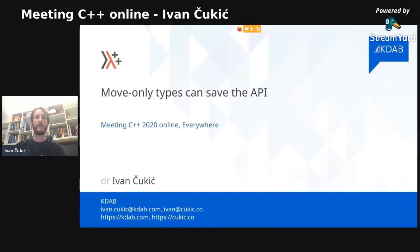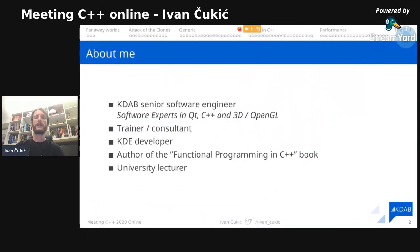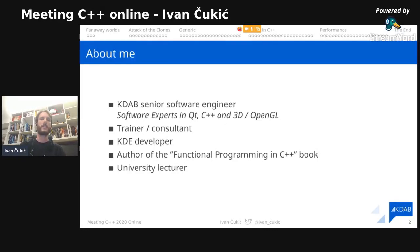Today's talk is going to be about move-only types and how they can save the API. I'm a KDAB senior software engineer, I wrote a book on Functional Programming in C++, I've been a KDAB developer for quite a long time, and I do some university teaching.